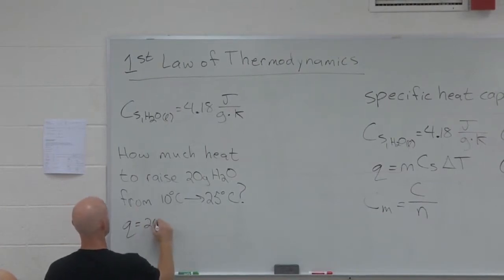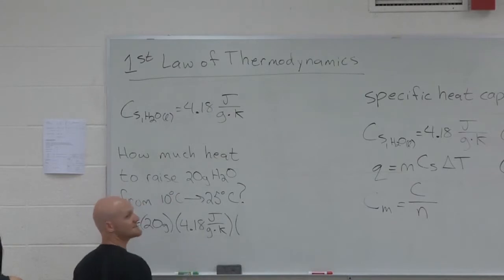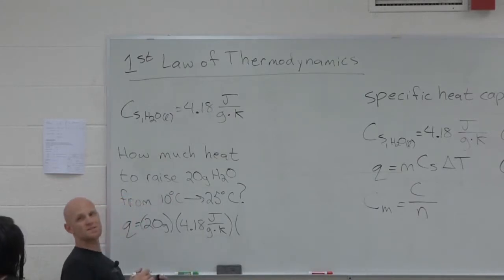And so in this case, Q, our mass was 20 grams. So in this case, specific heat capacity is 4.18. I need somebody to plug and chug this for me. And then notice it's delta T, right? What's delta T?